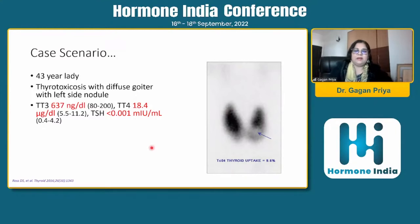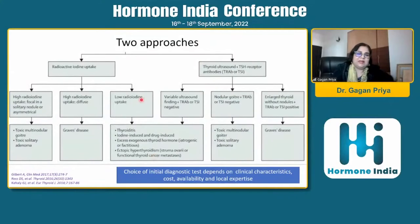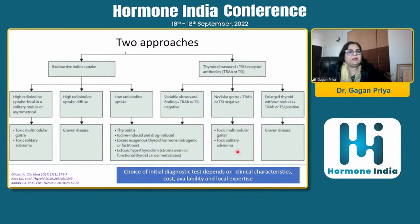The cold nodule should be further characterized by ultrasound and FNAC for further treatment. To summarize the investigative approach: radioactive iodine uptake differentiates toxic goiter versus Graves disease versus thyroiditis. Alternatively, thyroid ultrasound with TRAB can be used — a TRAB-positive diffuse goiter confirms Graves disease, while a TRAB-negative nodular goiter requires further characterization with both ultrasound and radioactive iodine.